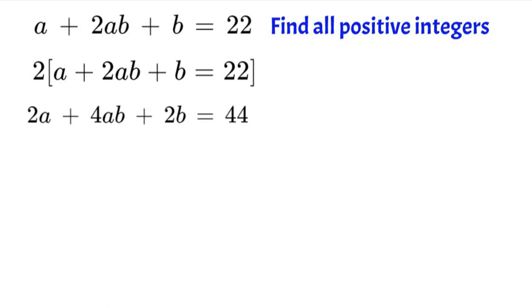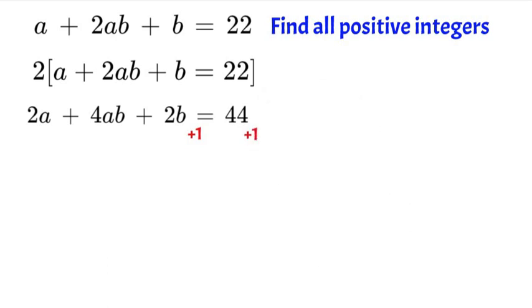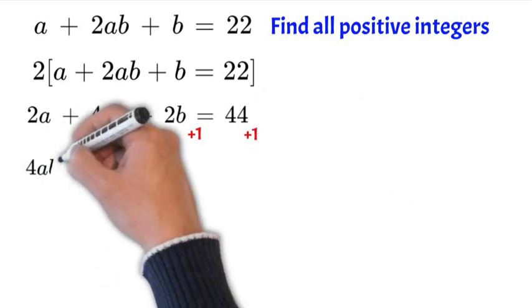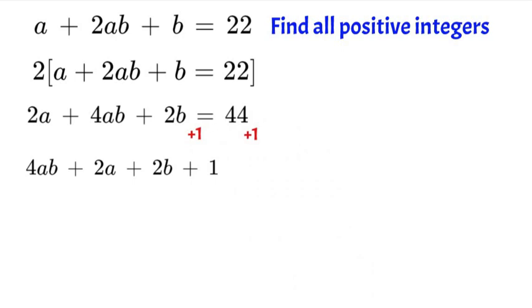Now what we want to do is factor the left side of this equation and right now we can't do that. So what we're going to do is add 1 to both sides. That'll leave us, we'll rearrange a little bit, with 4ab plus 2a plus 2b plus 1 which is equal to 45.